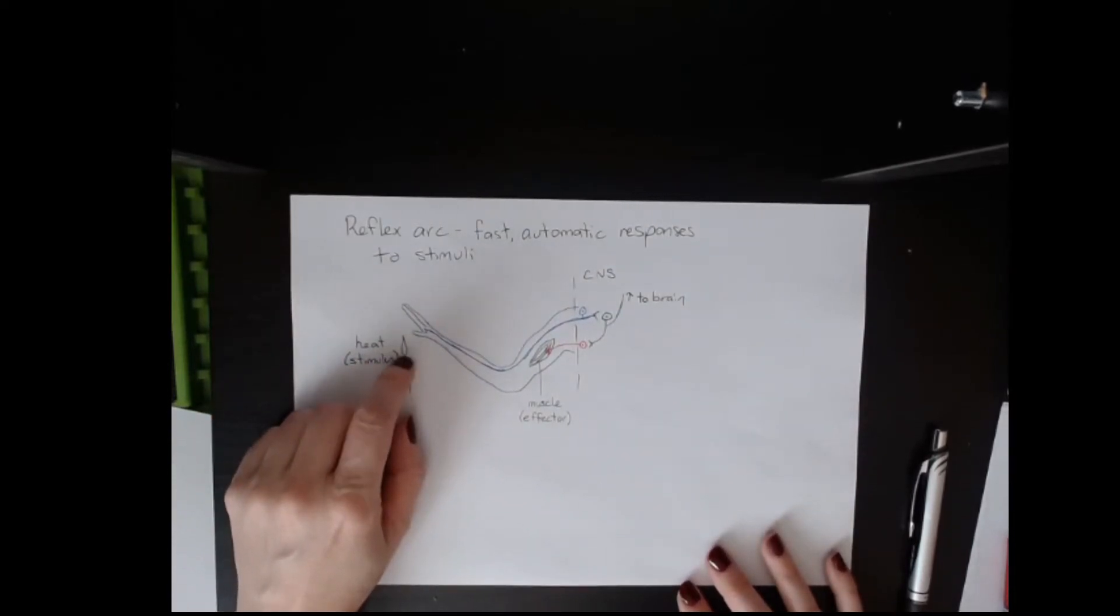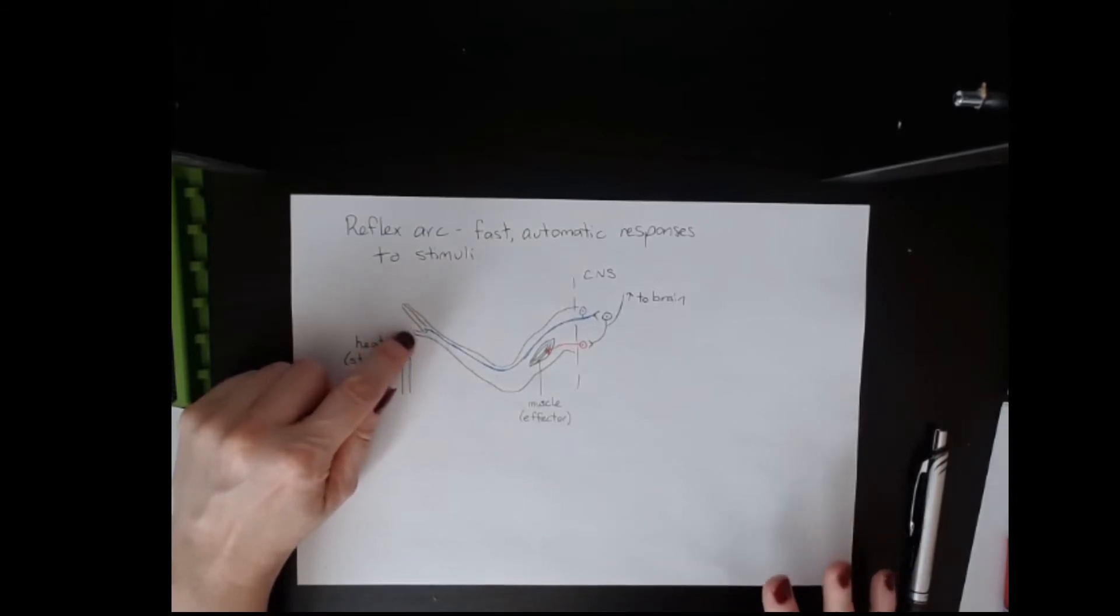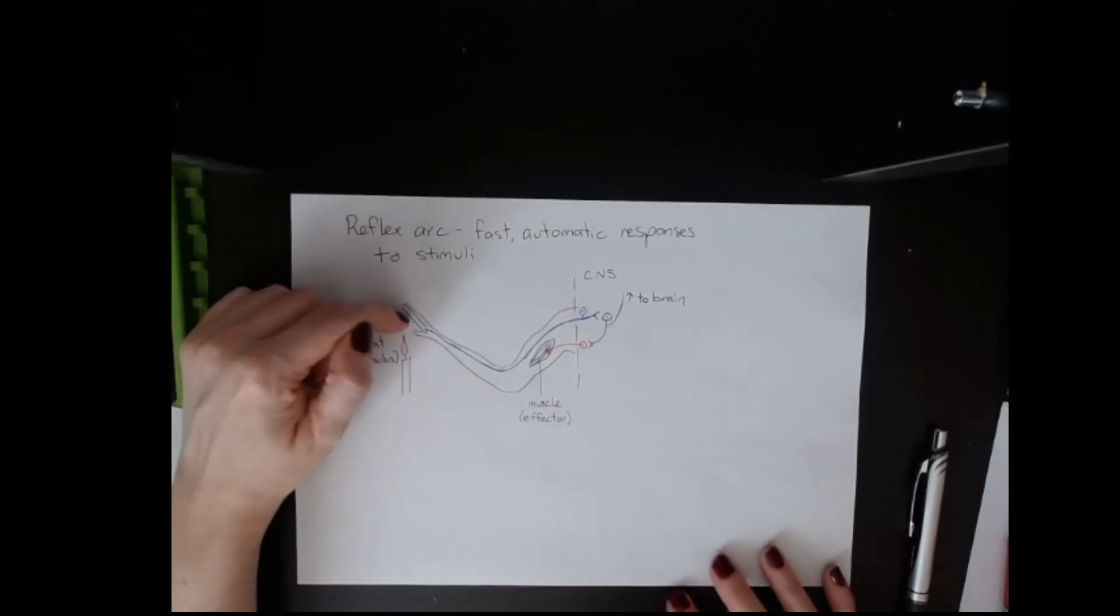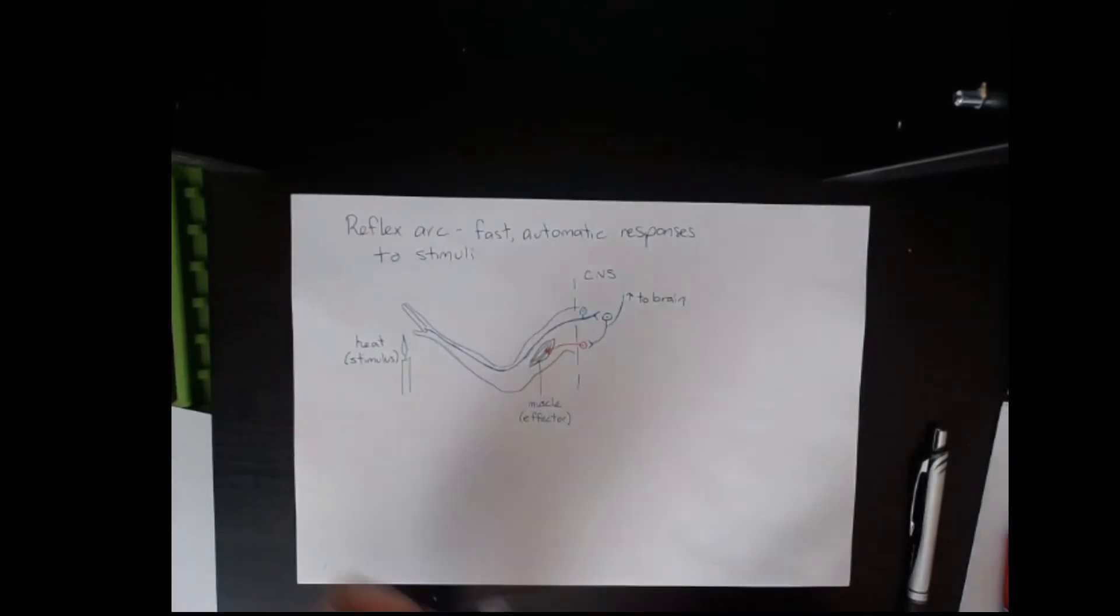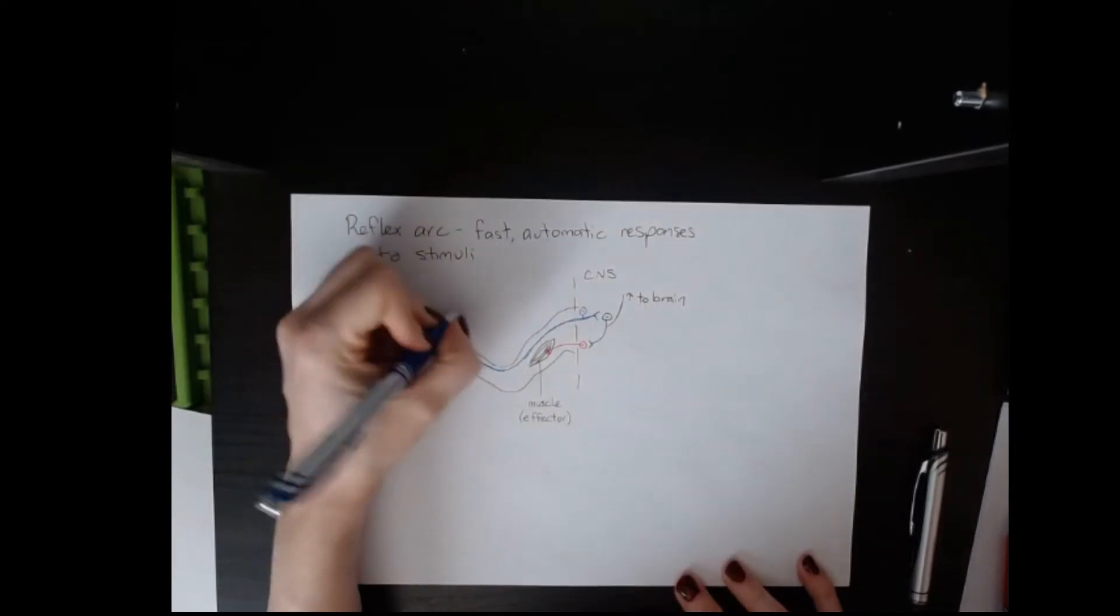This heat is acting as the stimulus. Then what happens - this is a hand, I know it only has two fingers and one thumb, don't at me - the first neuron that the impulse travels through is the sensory neuron.